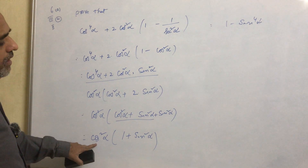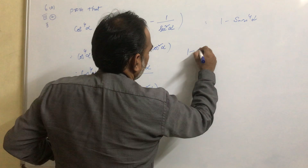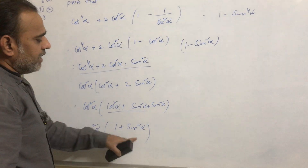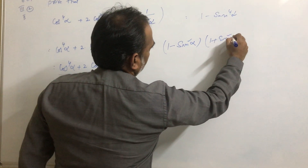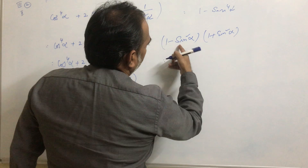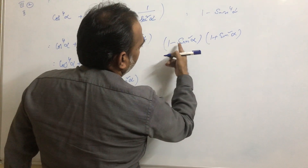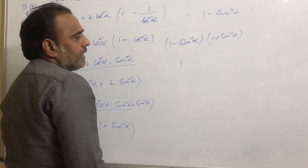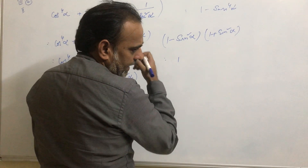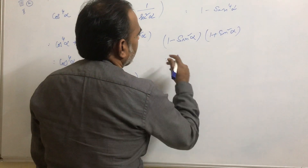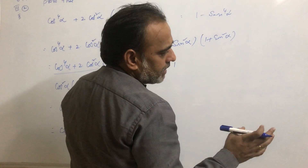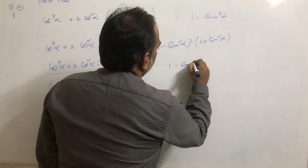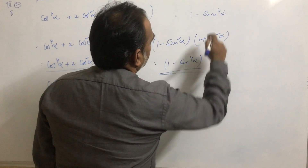So we have cos²α · (1 + sin²α). Now, cos²α can be written as 1 - sin²α, giving us (1 - sin²α)(1 + sin²α). This is of the form (a - b)(a + b) = a² - b², which we learned in 7th class. Therefore this equals 1 - sin⁴α, which is the RHS.